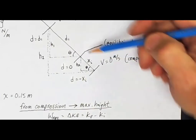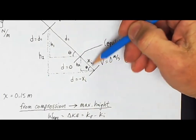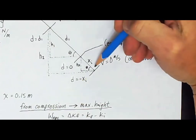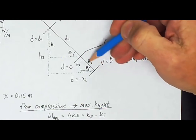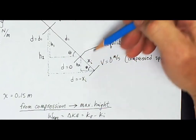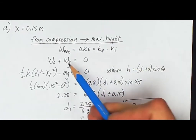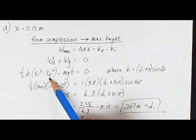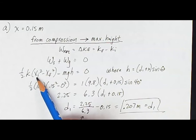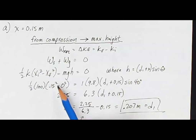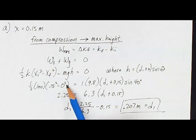Keep in mind the spring only does work during the portion where it's pushing the block, while gravity does work over the whole distance. The work done by the spring uses the equation with k = 100 N/m, initial compression xi = 15 centimeters, and final spring compression of zero since the spring is no longer stretched or compressed at the end.